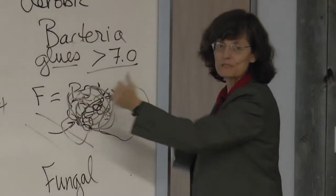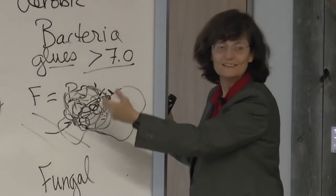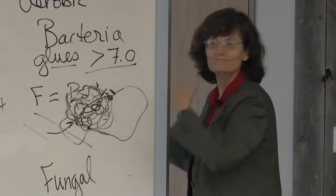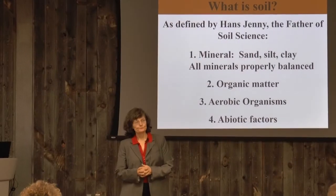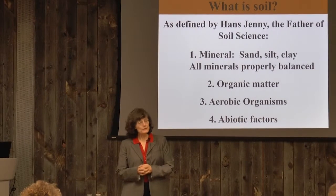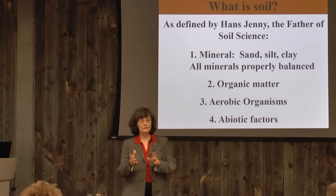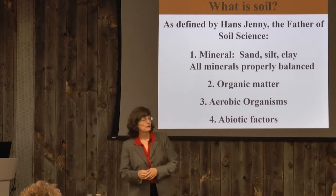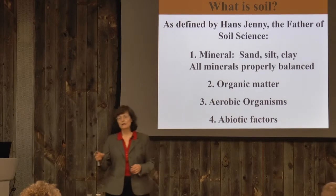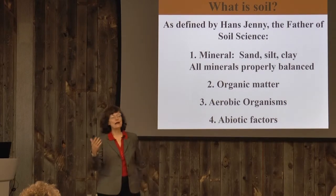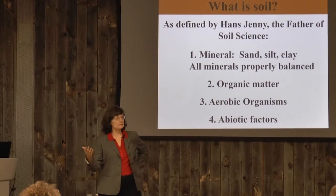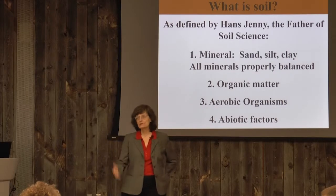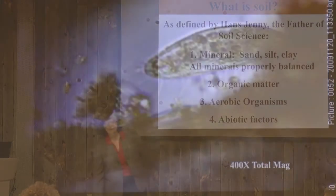Green material sits right at about 30 to 1. You want about 10% of the pile to be high nitrogen-containing material, sitting right around 10 to 1.